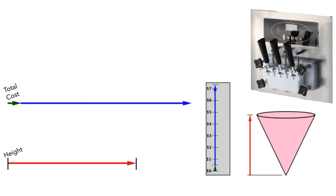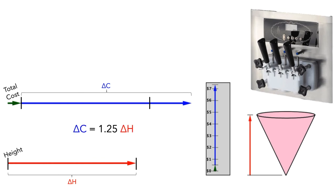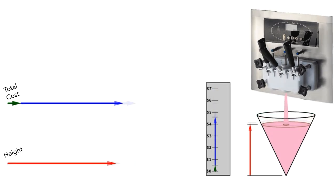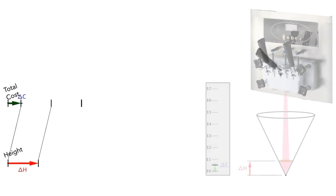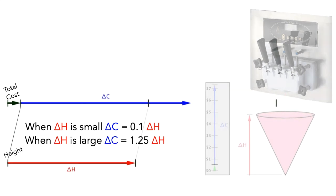Next, I'll add black bars to indicate the change in height. On the bottom, the distance between the bars is showing the amount of change in height. We can copy this length onto the cost bar. If we think about the amount of change in cost in dollars, we can see that the amount of change in cost is roughly 1.25 times as large as the amount of change in height. At first, when the amount of change in height — the distance between the black bars — is small, the amount of change in cost — the length of the blue bar — was only about one-tenth as large as the amount of change in height. Later, when the amount of change in height was large, the amount of change in cost was about 1.25 times as large as the amount of change in height.